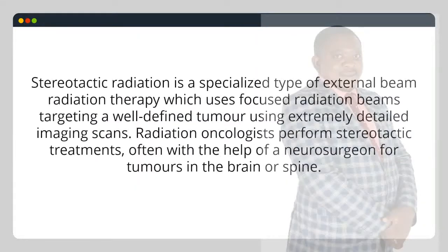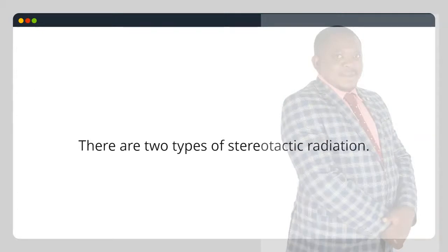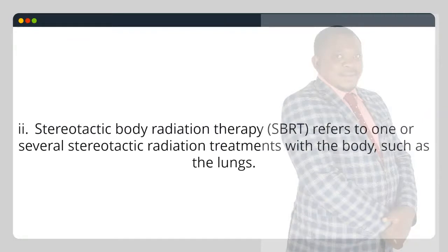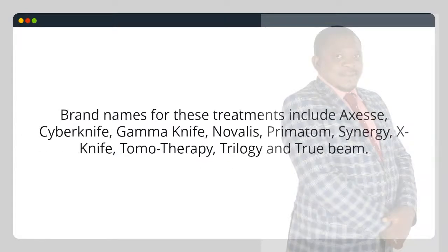Stereotactic radiation is a specialized type of external beam radiation therapy which uses focused radiation beams targeting a well-defined tumor using extremely detailed imaging scans. Radiation oncologists perform stereotactic treatments, often with the help of a neurosurgeon for tumors in the brain or spine. There are two types: i. Stereotactic radiosurgery (SRS) — when doctors use a single or several stereotactic radiation treatments of the brain or spine. ii. Stereotactic body radiation therapy (SBRT) — one or several stereotactic radiation treatments of the body, such as the lungs. Brand names include CyberKnife, Gamma Knife, Novalis, Primatom, Synergy, XKnife, Tomotherapy, Trilogy and TrueBeam.